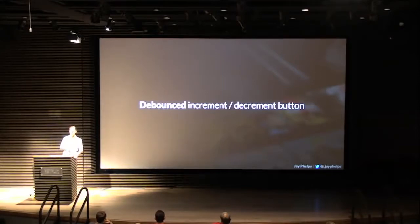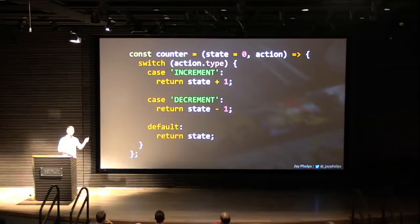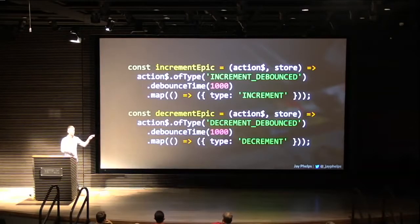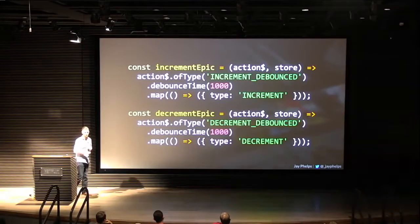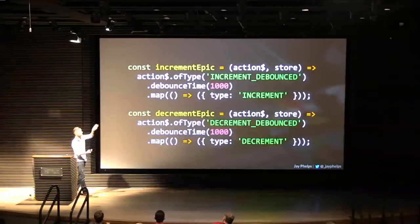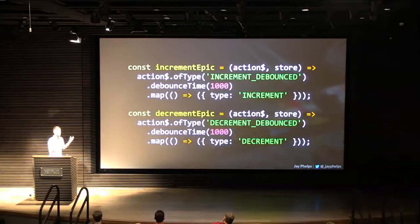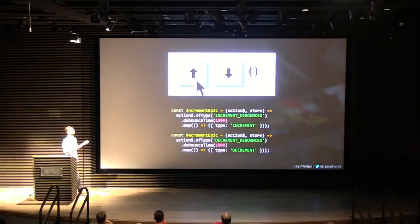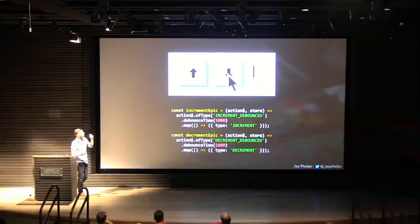Another example: debouncing an increment and decrement button. We have that basic counter reducer. Instead of the application emitting the increment action directly, it dispatches an 'increment debounced' action so the app knows it's about to be debounced. The epic listens for that, uses the RxJS debounceTime operator for one second, and then dispatches the actual increment action. In the app: you click the button, it waits a second, then updates.